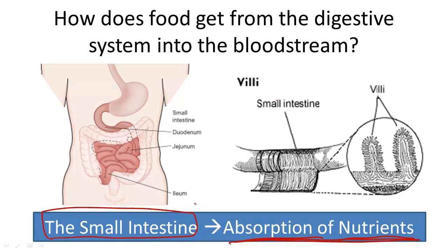The organ that's primarily in charge of absorbing nutrients into the bloodstream is the small intestine. Let's explore the structure of the small intestine, and then talk a little bit about how it functions.